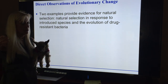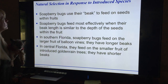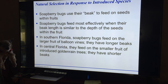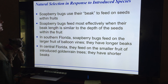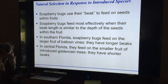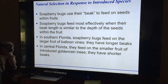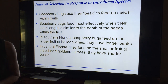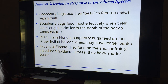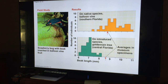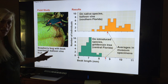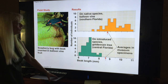Two examples of evidence: natural selection in response to introduced species, and the evolution of drug-resistant bacteria. For example, soapberry bugs in southern Florida feed on balloon vine and have longer beaks; in central Florida they feed on smaller fruit and have shorter beaks. That's an example of an introduced species influencing an organism that's already there.